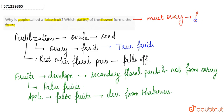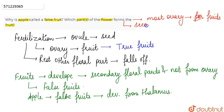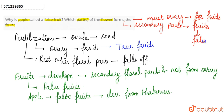The ovary is converted into the fruit. But under certain cases — in some exceptions — other secondary floral parts such as the thalamus also form the fruit, and such fruits are known as false fruits. So this is the complete answer to this question.